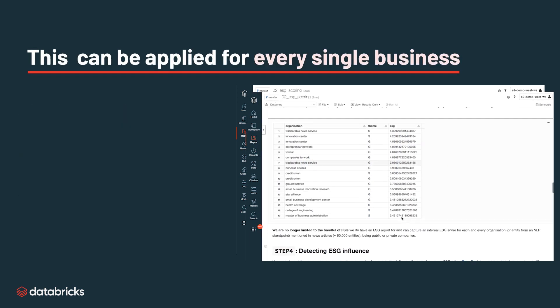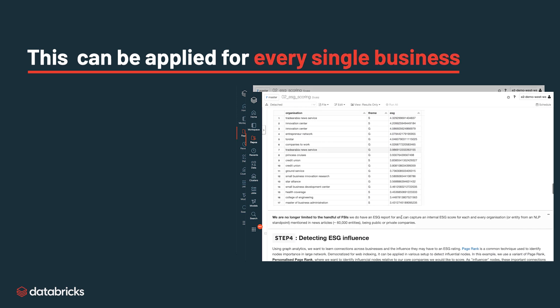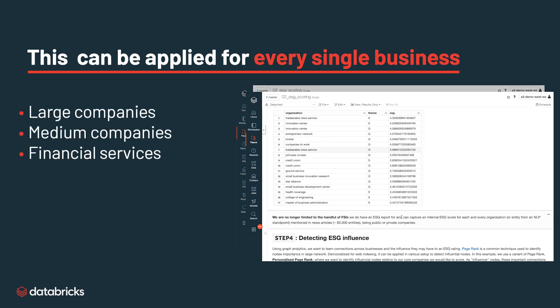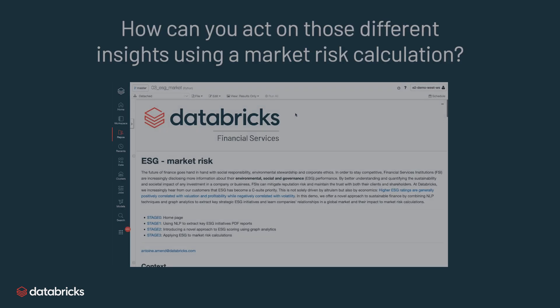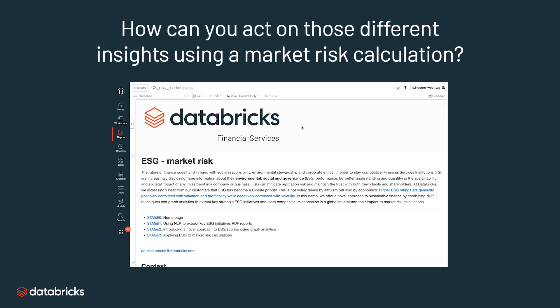This can be applied for every single business — large or medium companies, financial services or healthcare — understanding the influence one business's ESG negative or positive practices has on another in an interconnected global market. Moreover, how can you act on those different insights using a market risk calculation, looking at this from a reputational risk or supply chain resilience perspective?